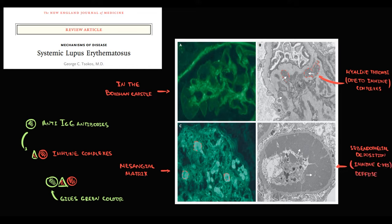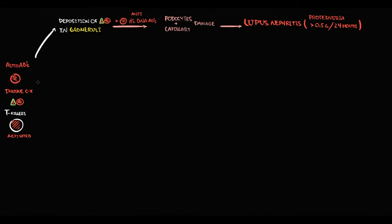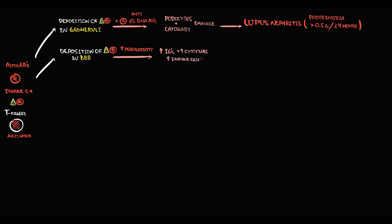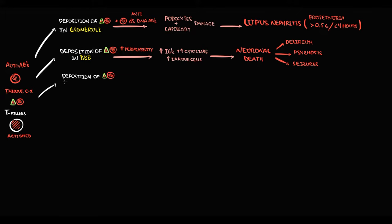Immune complexes once formed can accumulate practically everywhere in massive quantities. Deposition of immune complexes in the blood-brain barrier causes severe damage, increasing permeability so that pro-inflammatory cytokines and immune cells enter brain tissue and cause neuronal death. Progressive neuronal death manifests with delirium, psychosis, and seizures.